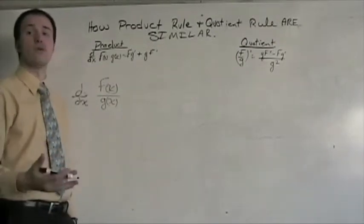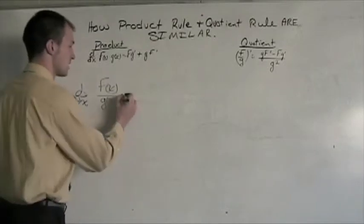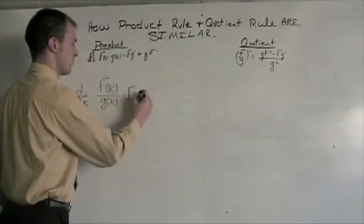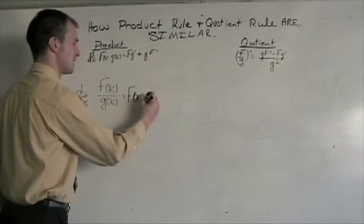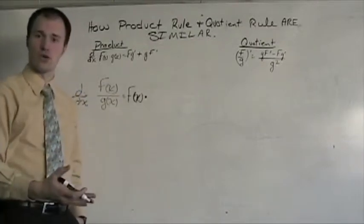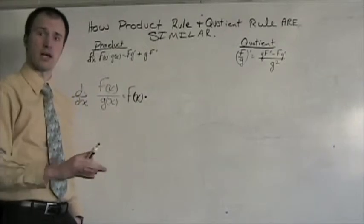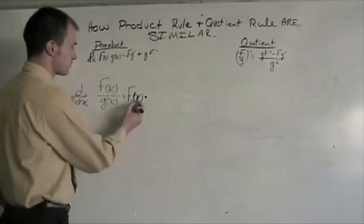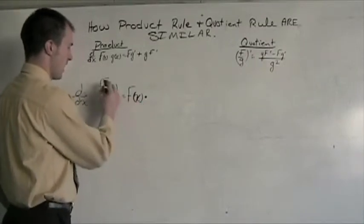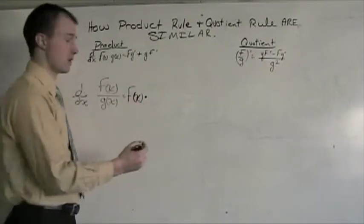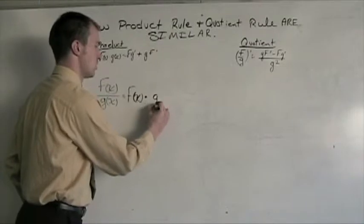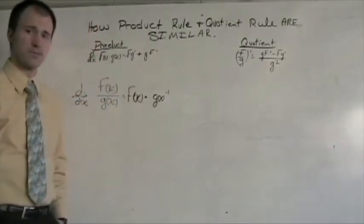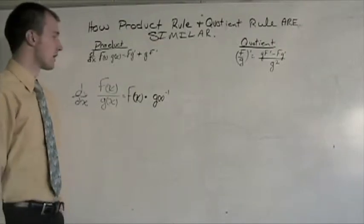First thing I'm going to do is I'm going to rewrite this as a product. And so this is really the function f(x) times, and just like dividing by two is the same thing as multiplying by its reciprocal one half, I can say that f(x) divided by g(x) is really f(x) times g(x) to the negative one power.